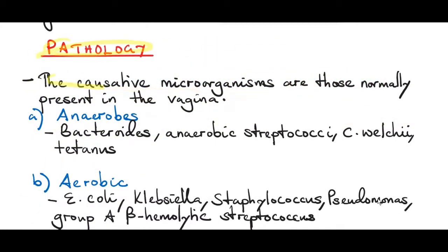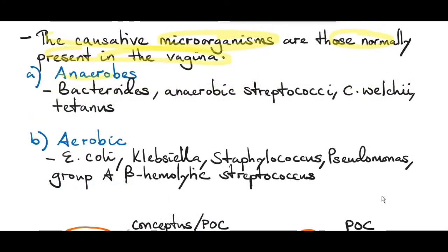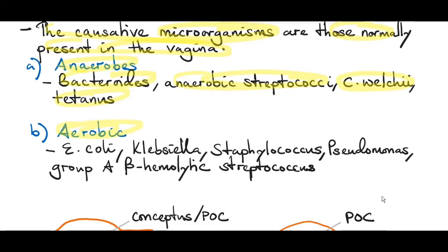The causative microorganisms that are usually responsible for causing a septic miscarriage are those normally present in the vagina. The most common anaerobes being Bacteroides, anaerobic streptococci, Clostridium welchii, and tetanus. The aerobic organisms include E. coli, Klebsiella, Staphylococcus, Pseudomonas, and Group A beta-hemolytic streptococcus.